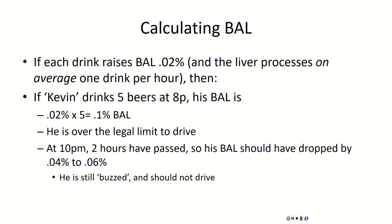To calculate blood alcohol level, each standard drink raises the BAL by 0.02, and the liver processes on average one drink per hour — though this varies by gender, body mass, and muscle-to-fat ratio. Here's a scenario: imagine our friend Kevin drinks five beers at 8 p.m., all consumed essentially at once. We calculate his BAL as 0.02 times 5, giving a BAL of 0.10 — over the legal limit to drive.